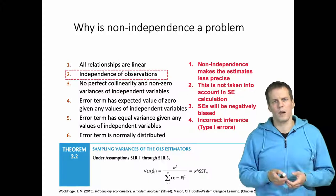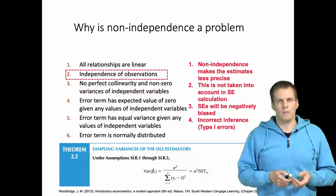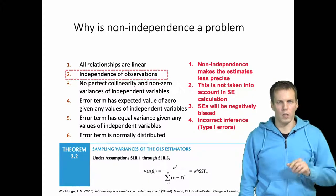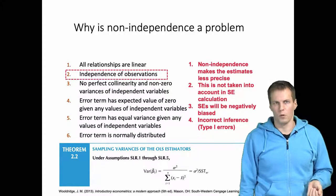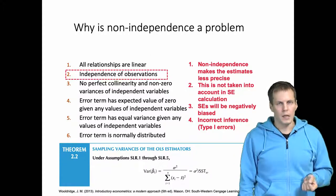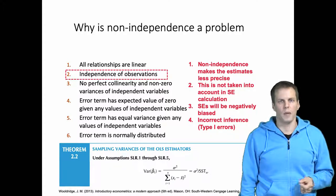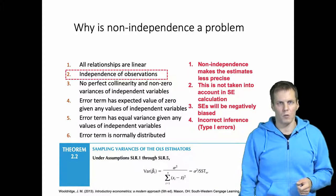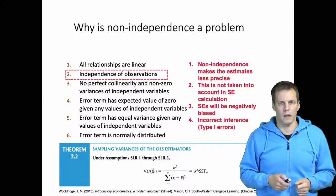So what can we do about this problem? There are a couple of strategies. One is to use a model that specifically includes terms to model the non-independence of the error term, which can be quite difficult if the pattern of dependency is complex. Another approach is to use cluster-robust standard errors, which allow you to take an arbitrary correlation structure between observations into account. That is a very general strategy, and I will explain it in another video.